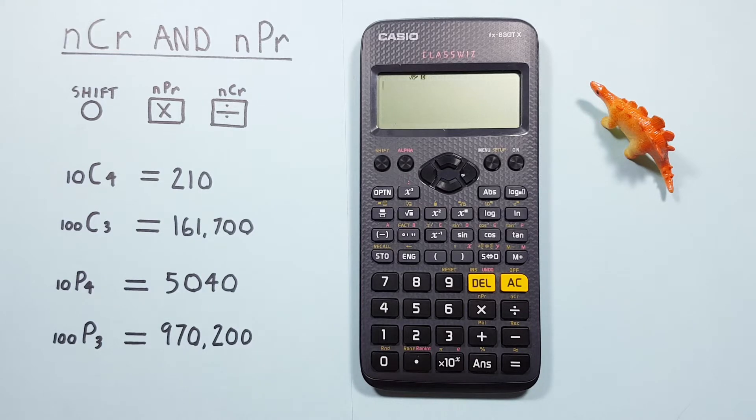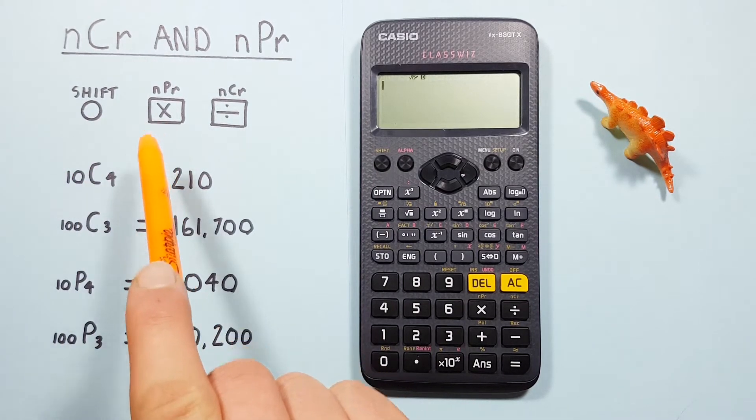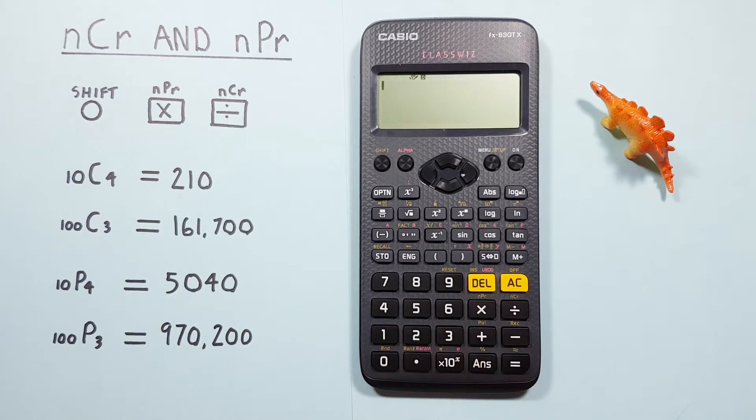To do this we'll be using the shift key, it looks like this, located here. The multiplication key with the shift function of permutation, that looks like this, located here. And the division key with the shift function of combinations, that looks like this, located here.